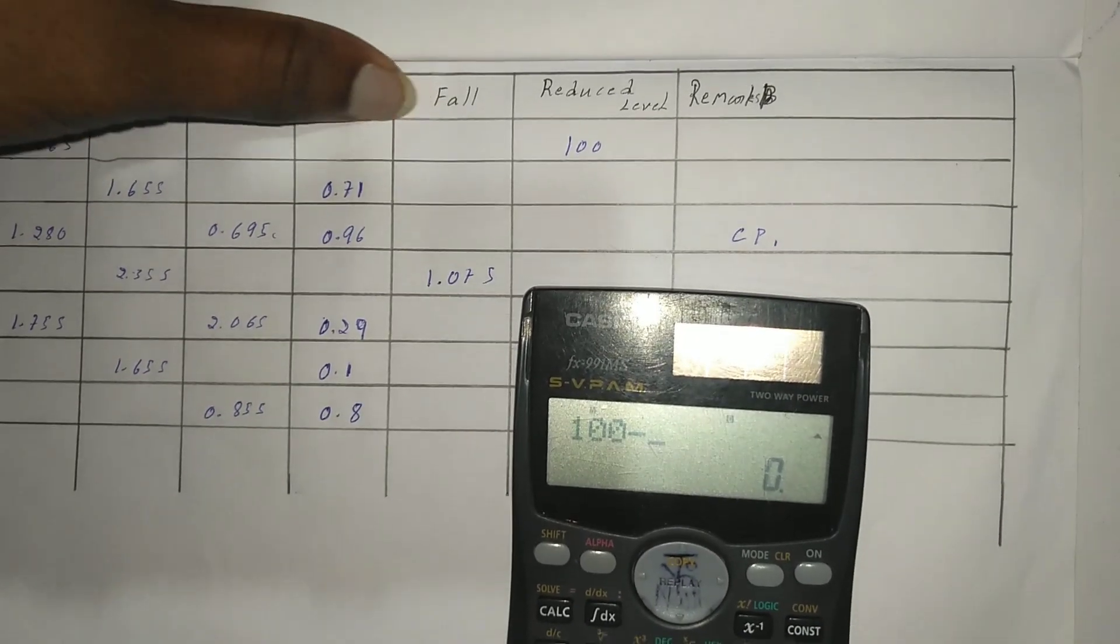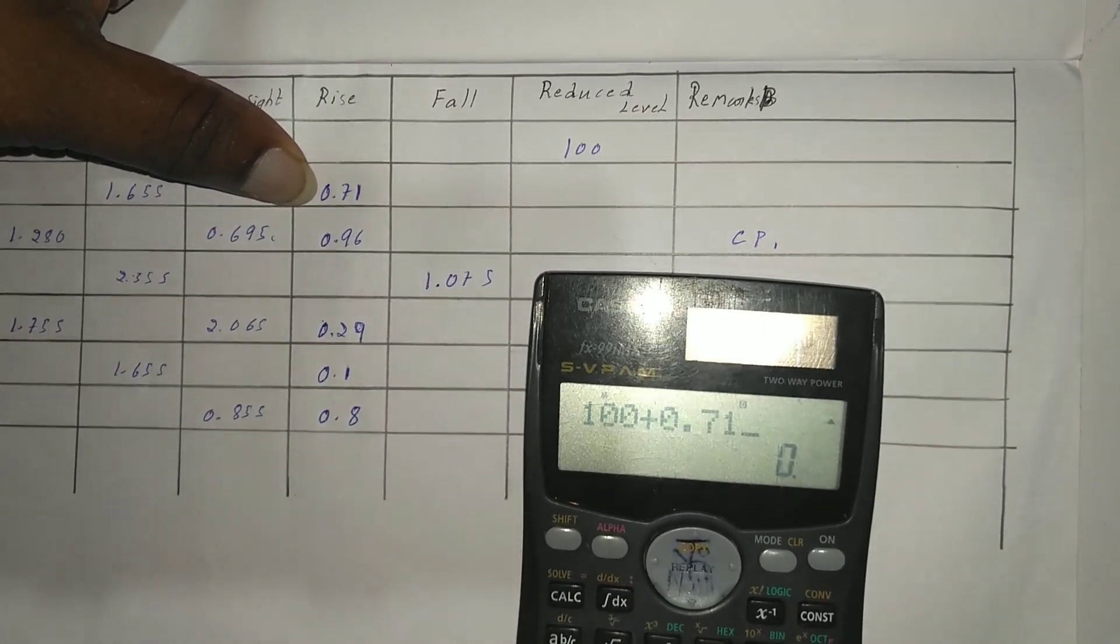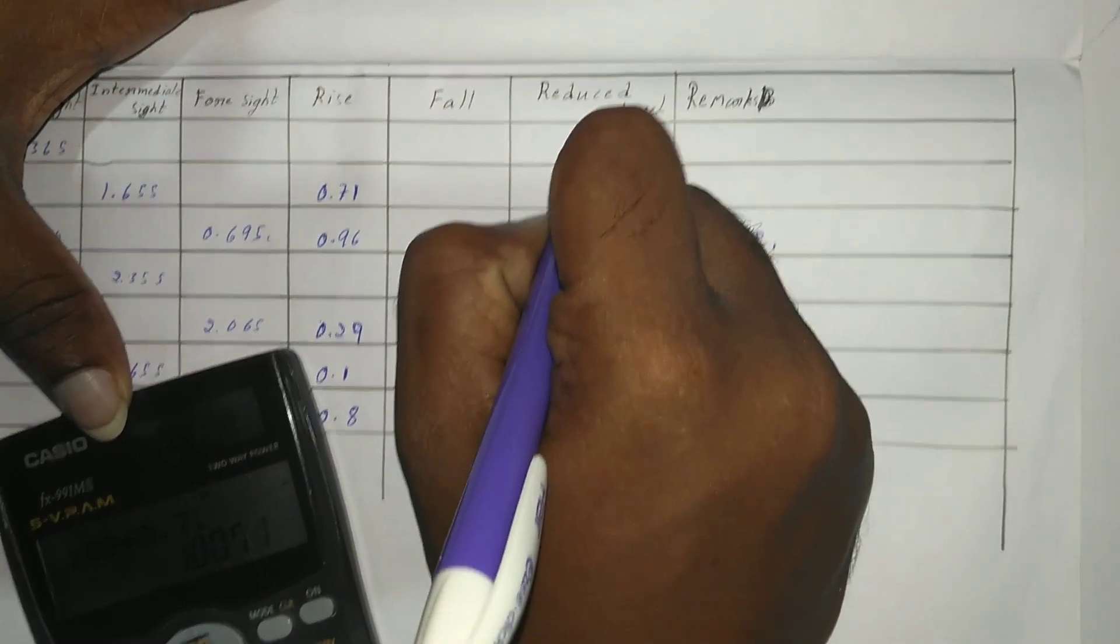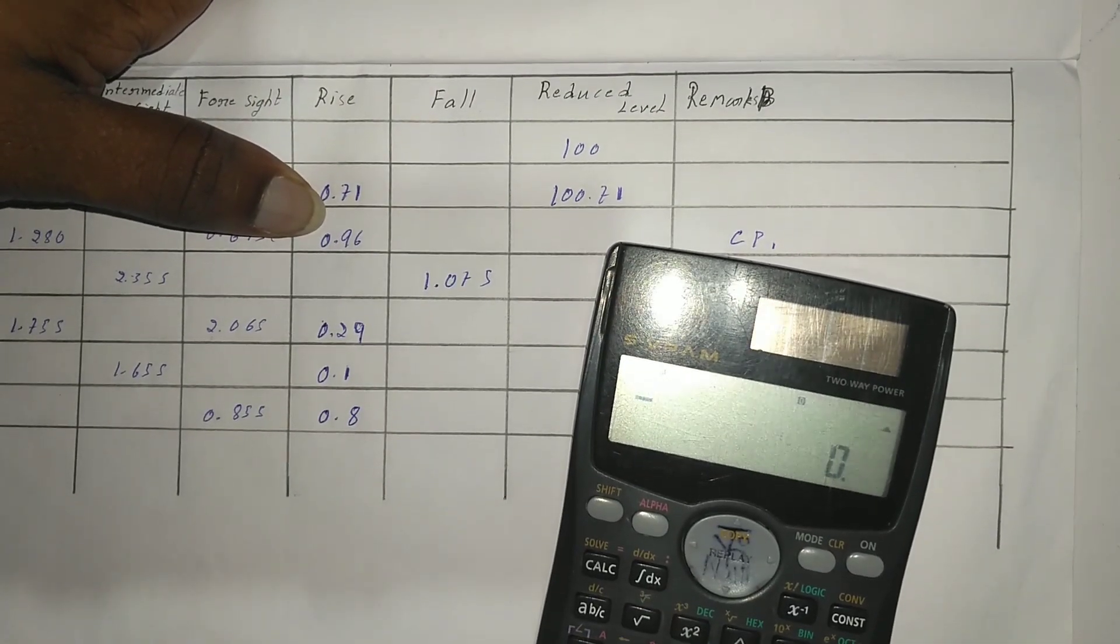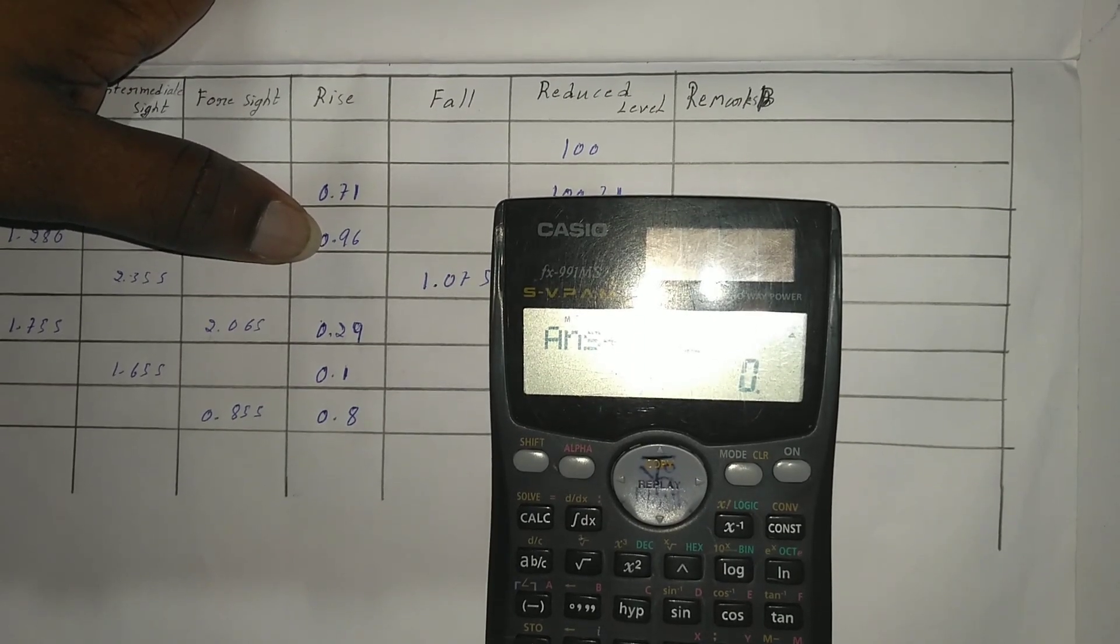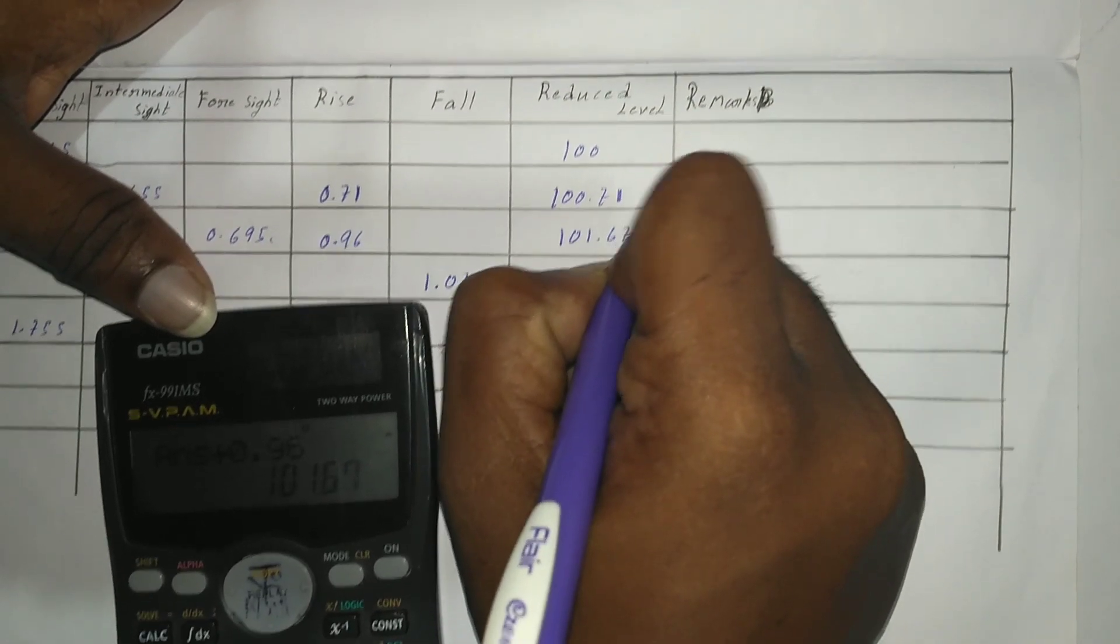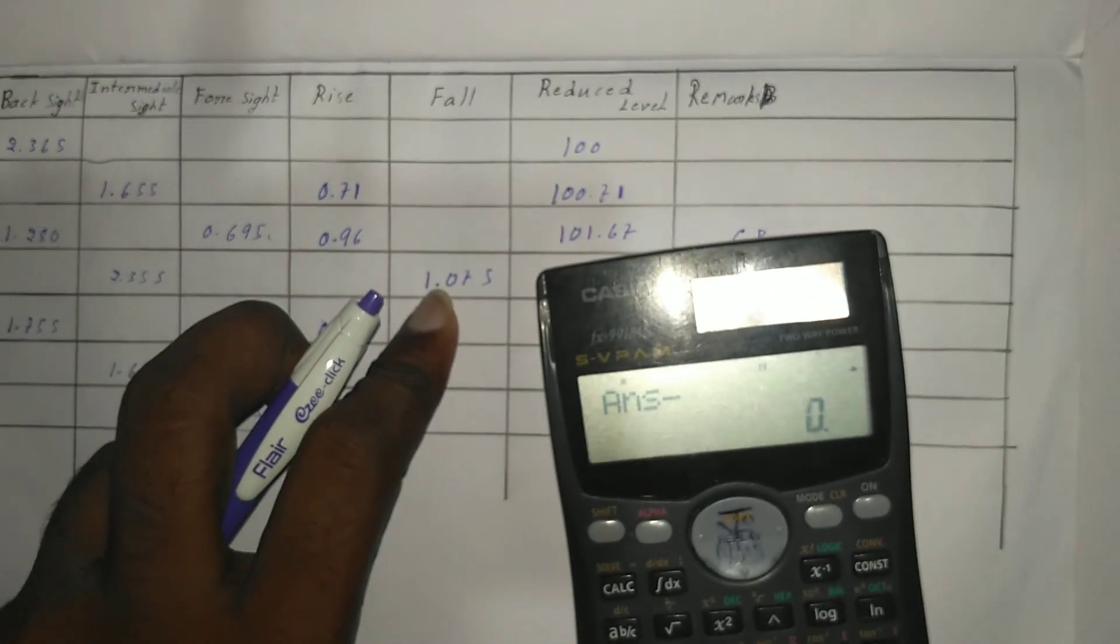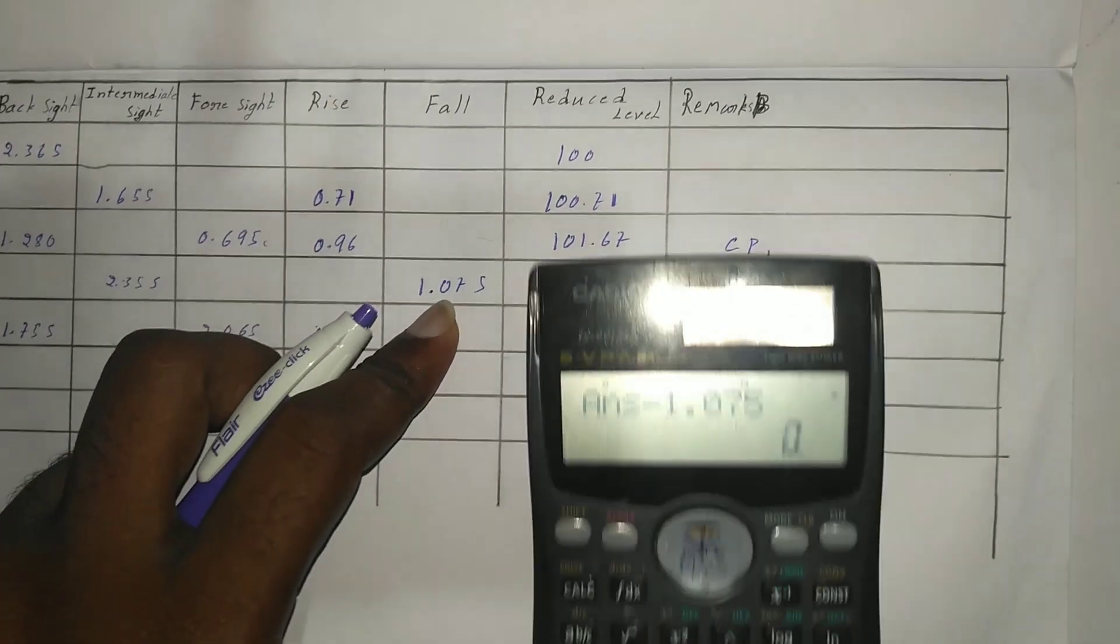First RL plus the rise gives the second RL. Second RL plus rise gives the third RL. Then minus because it is fall.